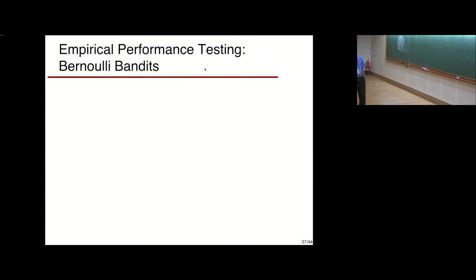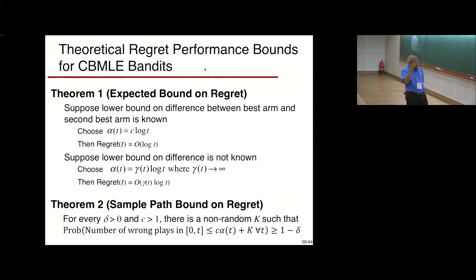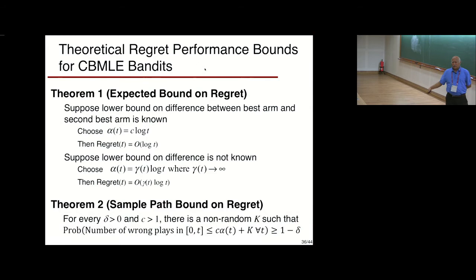Later in a Bayesian setting, Karlin and Johnson studied this, trying to prove that certainty equivalence — choosing the empirically better arm — is not optimal. Then Bellman cleaned up that area with dynamic programming.